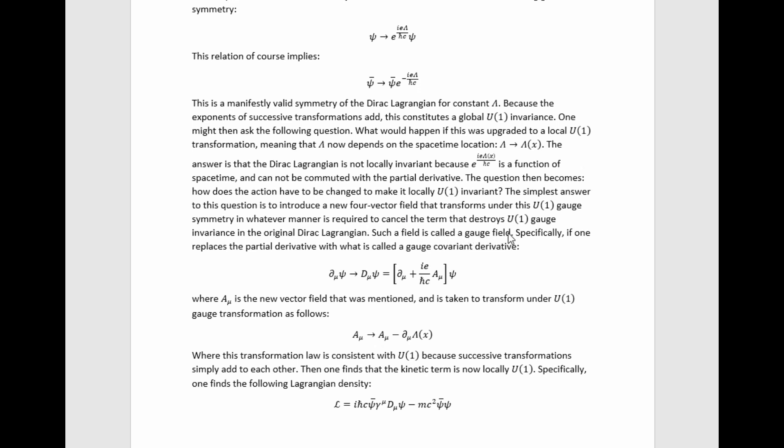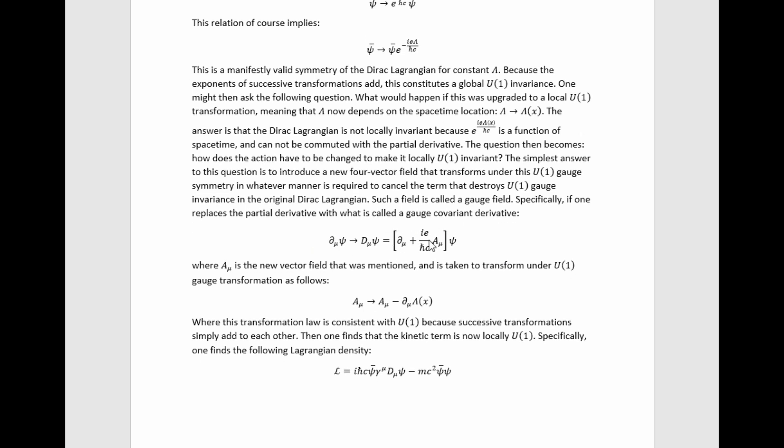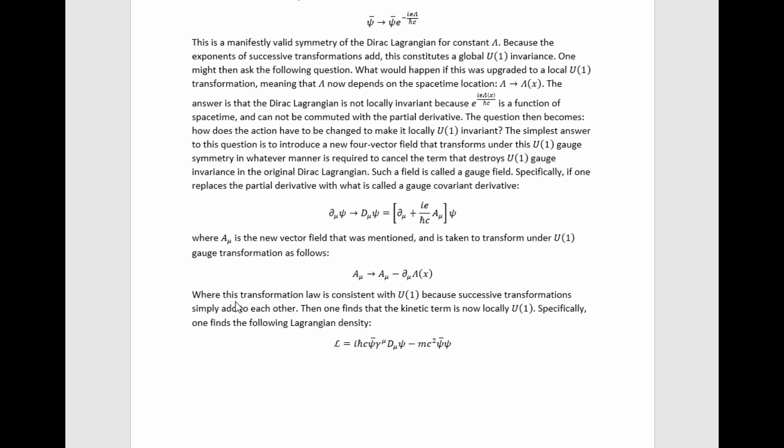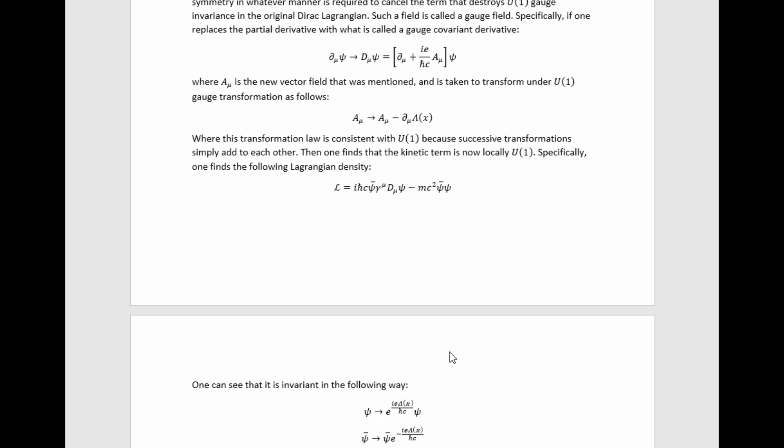Such a field is called a gauge field, specifically if one replaces the partial derivative with what is called a gauged covariant derivative here, where this A mu is that new gauge field that I've been talking about, and then take that A mu there to transform under U1 gauge transformations in this manner, where this transformation law is consistent with the U1 label because successive transformations simply add to each other, then one finds that the kinetic term is now locally U1 invariant. So with this substitution and this transformation relation, we find that this Lagrangian actually is locally U1 gauge invariant.